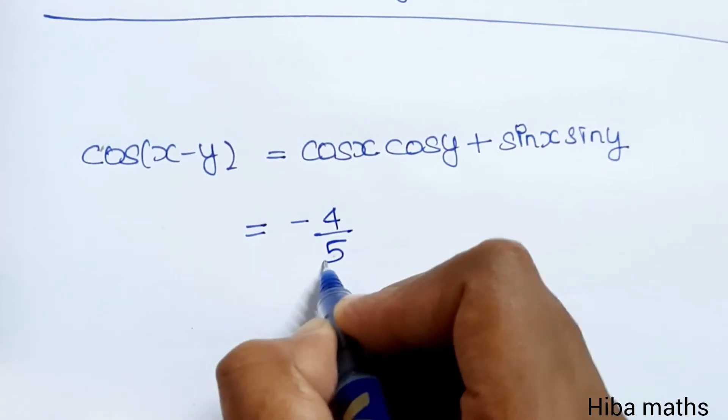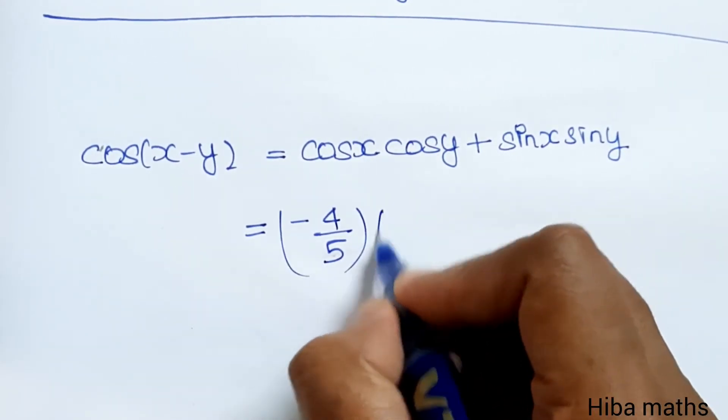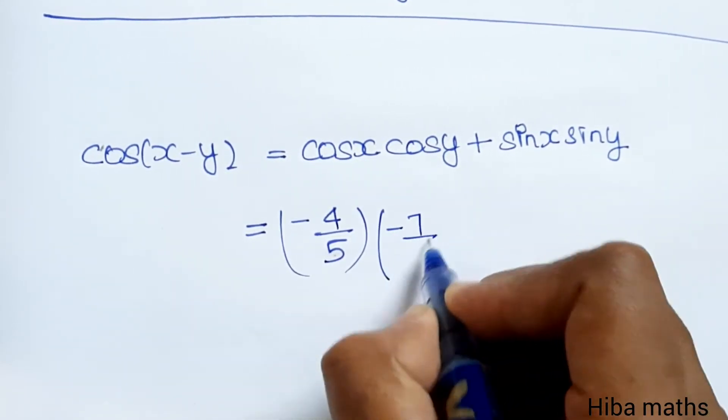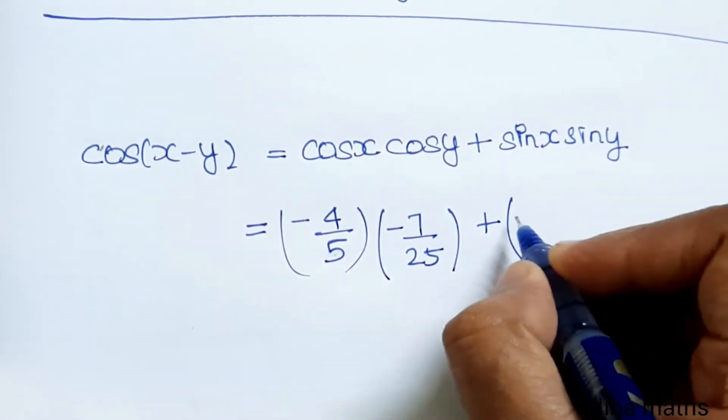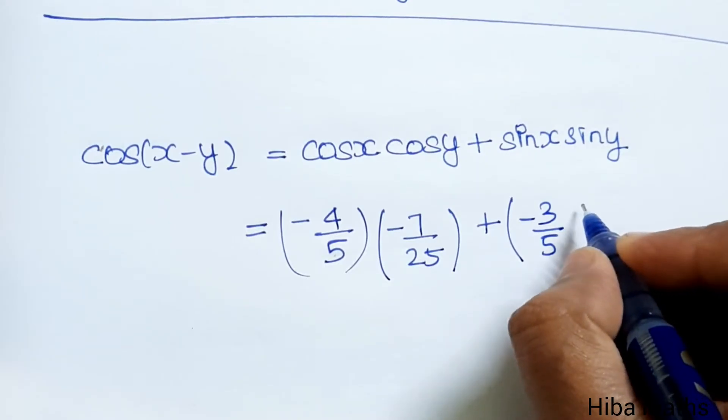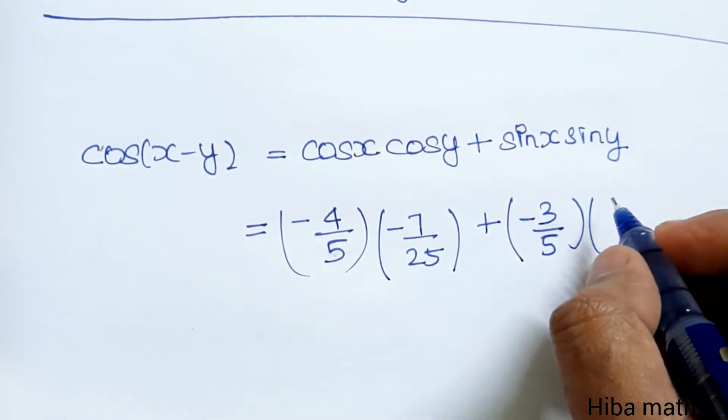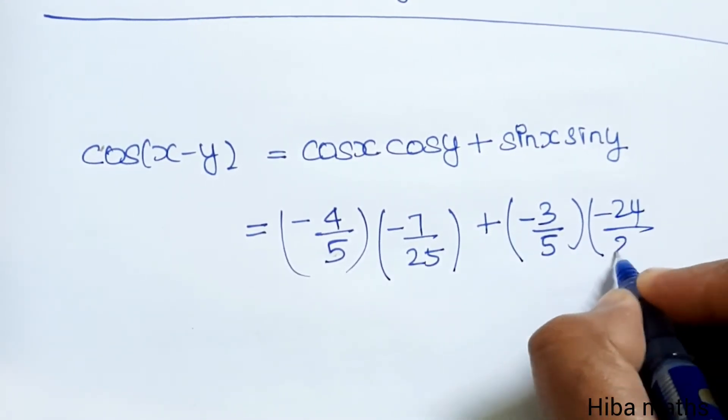Cos x value is minus 4 by 5 into cos y value minus 7 by 25, plus sin x value minus 3 by 5 into sin y value minus 24 by 25.